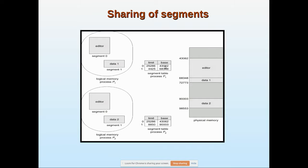In the segment table, the base for segment zero is 430, and there is a corresponding limit for its length. In physical memory, the editor occupies only one space — it is not stored separately for each process. This editor space is shared by both processes. Data one starts from address 68, and data two has its own space. Each process maintains its own separate segment table, but they point to the same physical address for the shared editor segment.